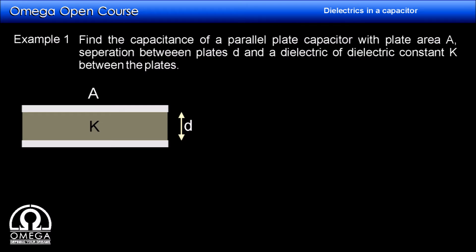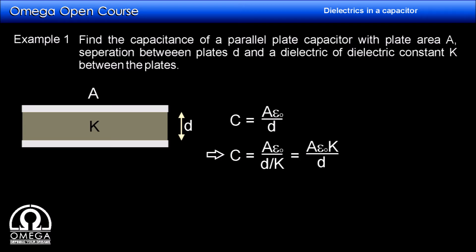In the first example, let us find the capacitance of a parallel plate capacitor with plate area A, separation between plates D, and the entire region between the plates filled with a dielectric of relative permittivity K. The capacitance of a parallel plate capacitor is A·epsilon_0 over D. Since the electric field travels distance D in a medium of dielectric constant K, this distance is equivalent to D over K in vacuum. Therefore, the capacitance is A·epsilon_0 divided by D over K, which equals A·epsilon_0·K divided by D.